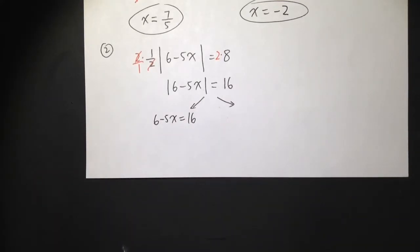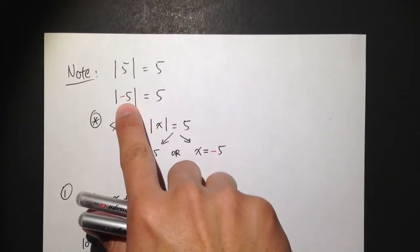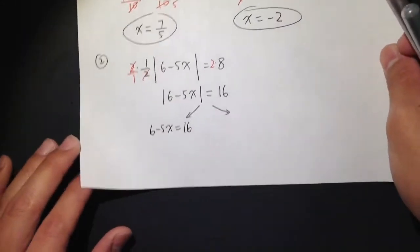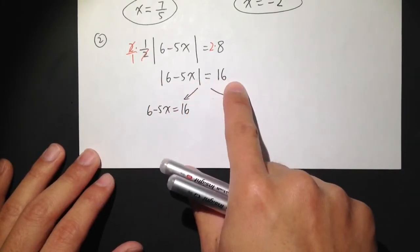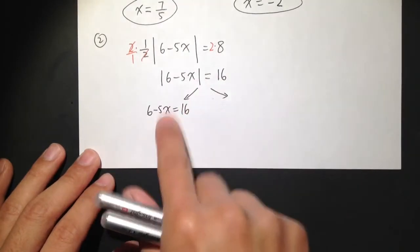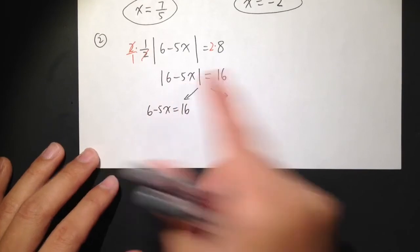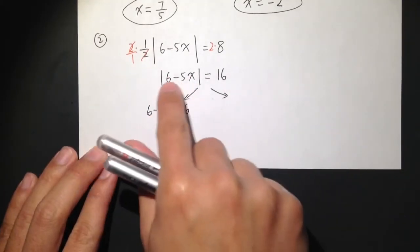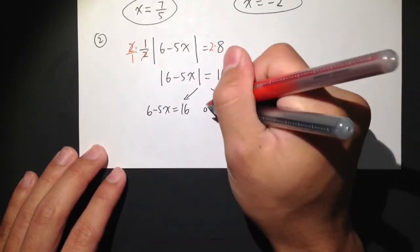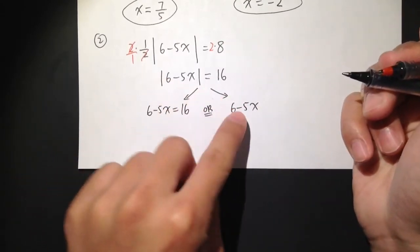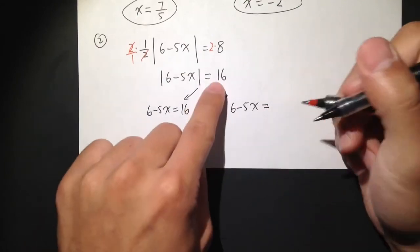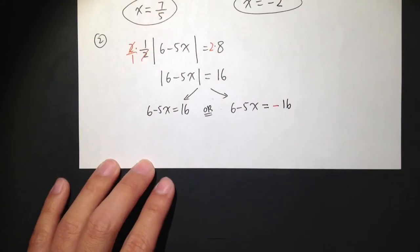The first equation is 6 minus 5x equals 16. Notice that the inside never changes — you do not change the inside. Even though when you see a negative number inside the absolute value you make that equal to a positive, when solving equations you write down exactly what you have inside. The second case: 6 minus 5x equals negative 16.